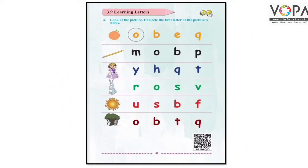यही activity बच्चो, आपकی English की textbook में صفحه نمبر 44 पर दी गई है। आपको pencil की मदद से pictures देखनी हैं और उन pictures के नाम की शुरूआत जिन letters से होती है, उन letters को circle बनाना है। यह activity करके अपनी English की teacher से check करवाना है। Thank you so much!